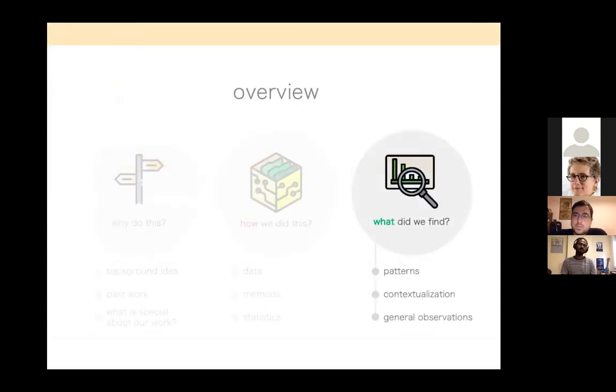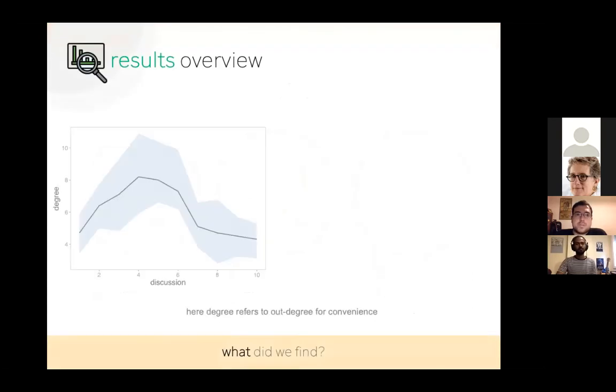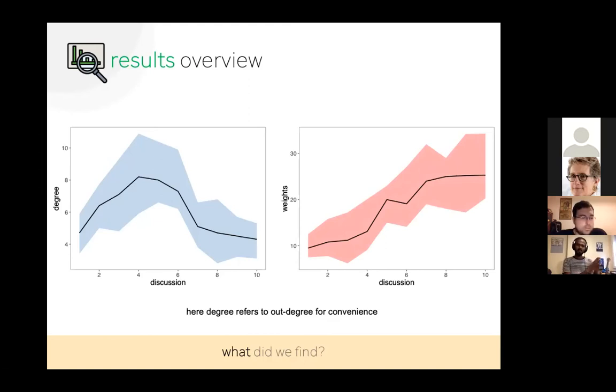So let's jump right into the results. These are different discussions on the x-axis and the degree of nodes on the y-axis. What we found was initially there was a lot of replies and reply threads among students. You can think of this as initially they were interacting with more people, but as the course progressed they started interacting with less and less people. But there is another story to it. The weights, which is the number of replies, the number of times they were interacting with each other, actually increased and stayed constant. So what was basically happening was they were interacting with lesser people but were interacting more often with them. So they were forming their own clusters where they were discussing more.